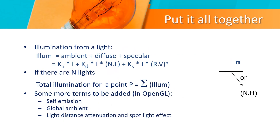Put it all together. Illumination from a light equals Ambient plus Diffuse plus Specular. If there are n lights, total illumination for a point P — the formula is given below. Some additional terms in OpenGL include Self Emission, Global Ambience, Light Distance Attenuation, and Spotlight Effect.